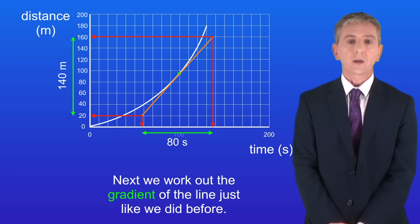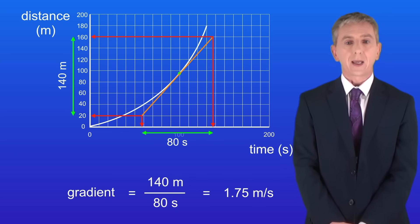So in this case the distance traveled is 140 meters and the time taken is 80 seconds. Dividing 140 by 80 gives us a speed at this point of 1.75 meters per second. Remember you'll find plenty of questions on distance-time graphs in my revision workbook and you can get that by clicking on the link above.